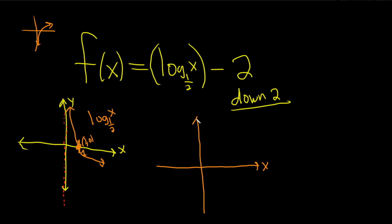So x, y, and here's our vertical asymptote. And we're just taking this graph and going down 2.